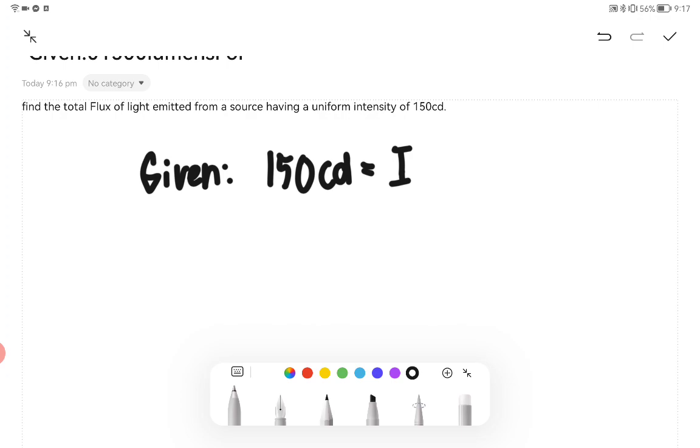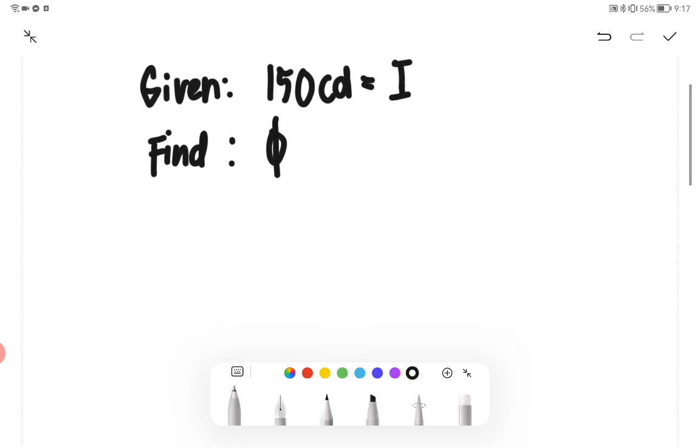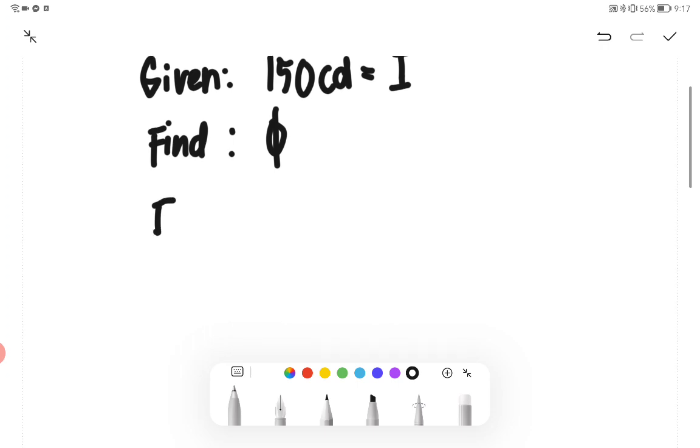And we are asked to find the total flux of light emitted from a source having a uniform intensity of 150 candela. So, what will be our formula?